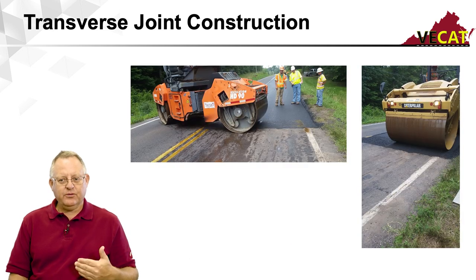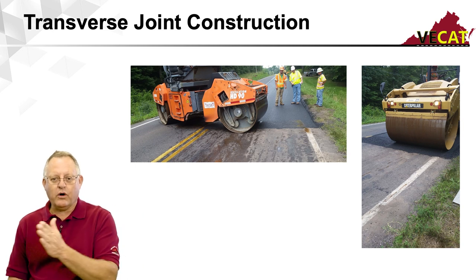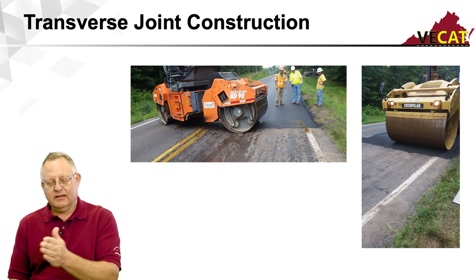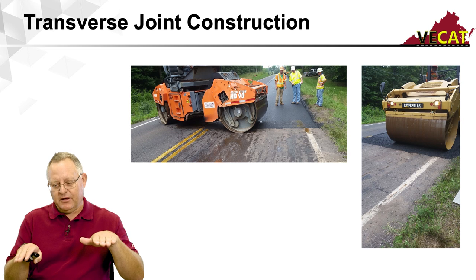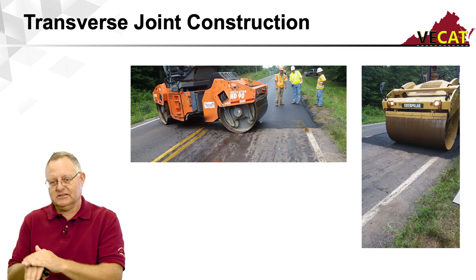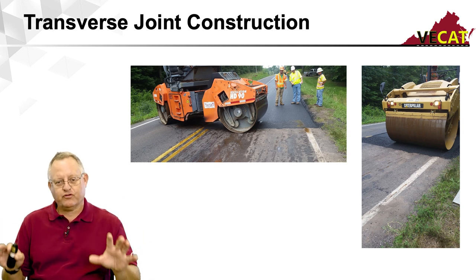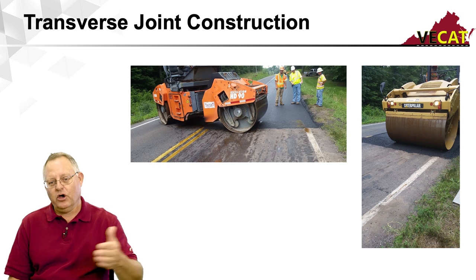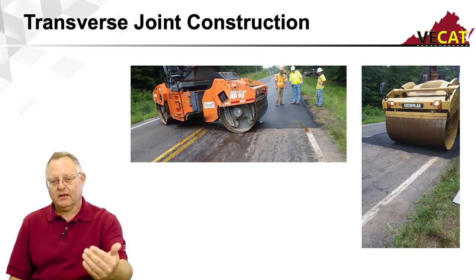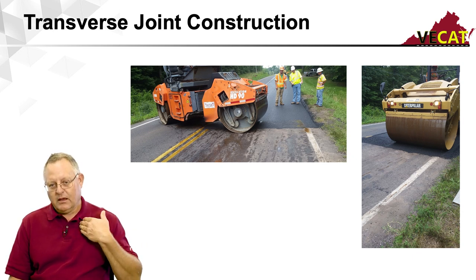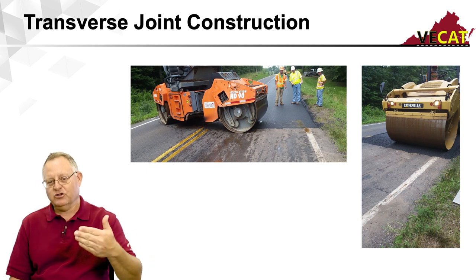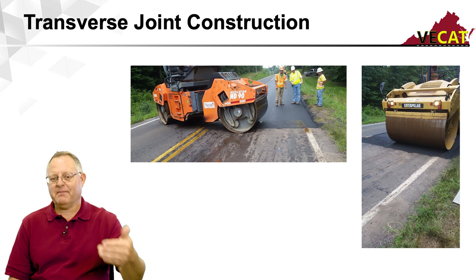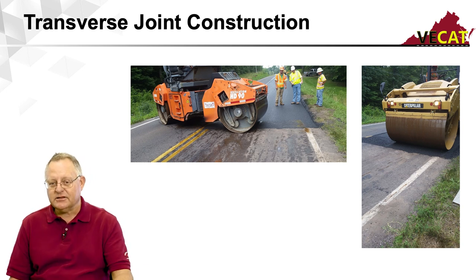There are two approaches to rolling the transverse joint. One is rolling parallel to the joint, where the drum sits partially on the hot mat and partially on the existing mat — this works well if traffic allows. The other is rolling perpendicular to the joint, in the direction of traffic, when traffic control won't permit parallel rolling. The appropriate approach is a project-by-project decision that should be discussed prior to paving.